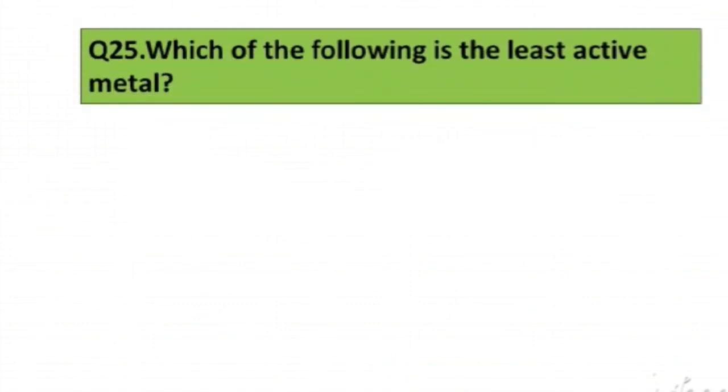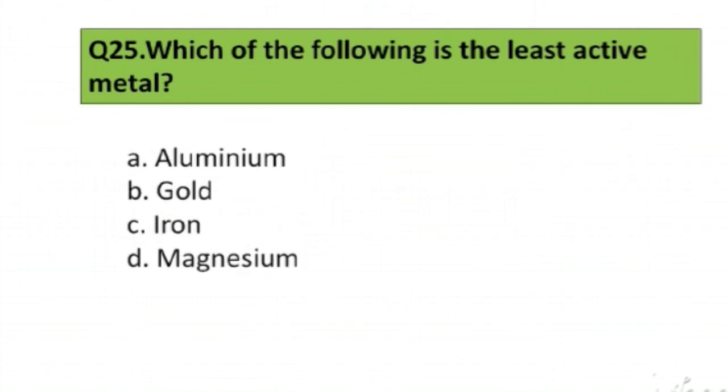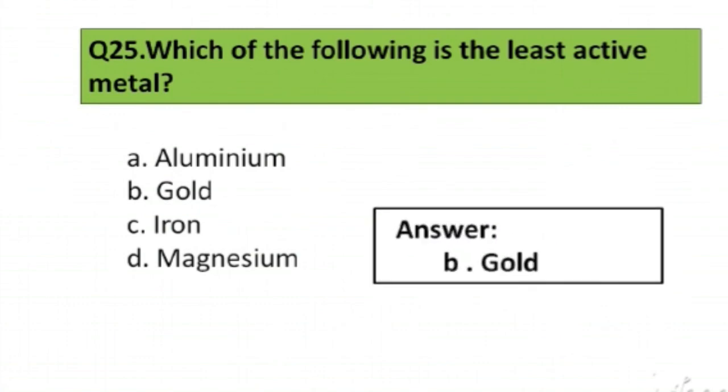Question number 25. Which of the following is the least active metal? A. Aluminium, B. Gold, C. Iron, D. Magnesium. The right answer is option B, Gold.